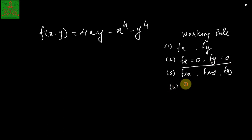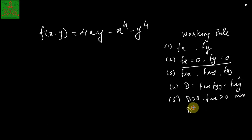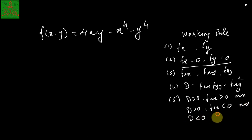The fourth step is finding D, which is fxx·fyy minus fxy squared. The fifth step is to decide whether the function has a maximum or minimum value at those points. If D is positive and fxx is positive, the function has a relative minimum. If D is positive and fxx is negative, the function has a relative maximum.